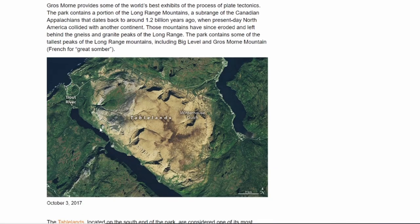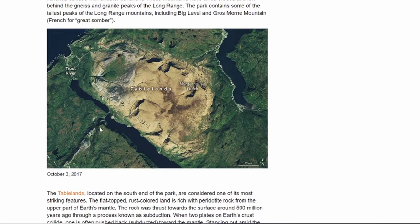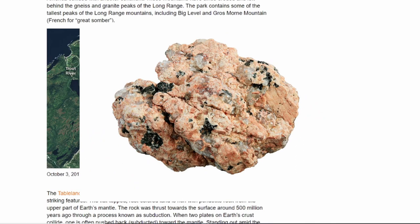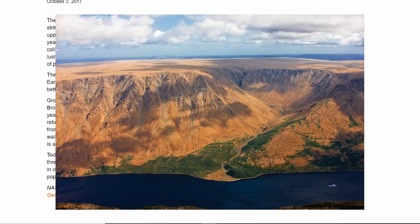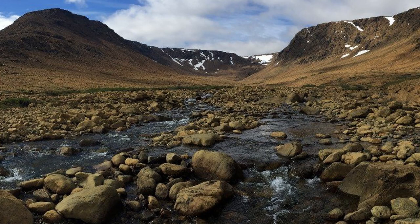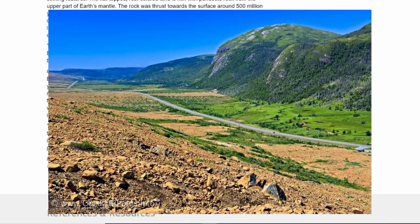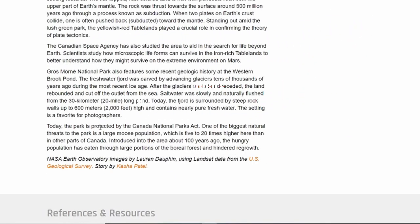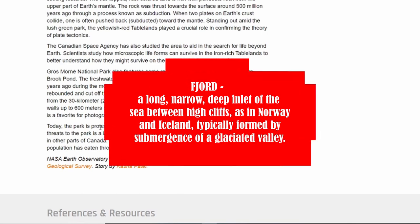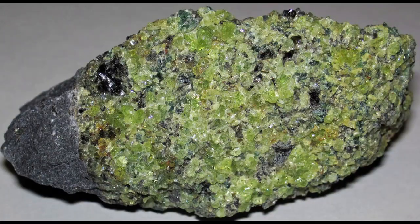The UNESCO World Heritage Site covers 1,800 square kilometers in the great northern peninsula of western Newfoundland. Gros Morne provides some of the world's best exhibits of the process of plate tectonics. The park contains a portion of the long-range mountains, a sub-range of the Canadian Appalachians that dates back to around 1.2 billion years ago, when present-day North America collided with another continent. The tablelands, located on the south end of the park, are considered one of the most striking features — the flat-topped, rust-colored land is rich with peridotite rock from the upper part of Earth's mantle, thrust towards the surface around 500 million years ago through subduction.